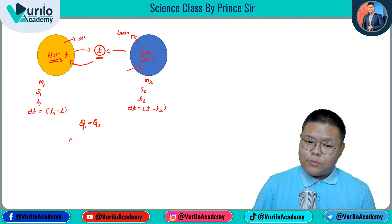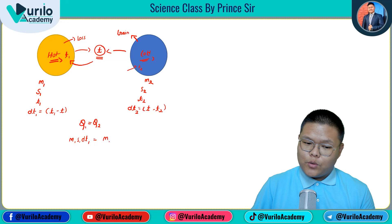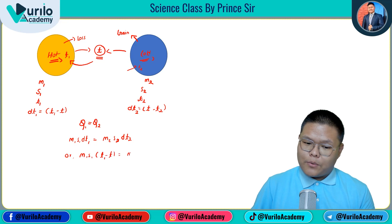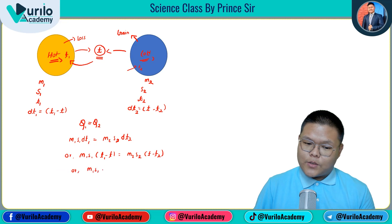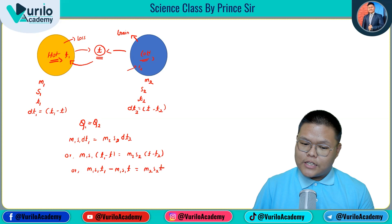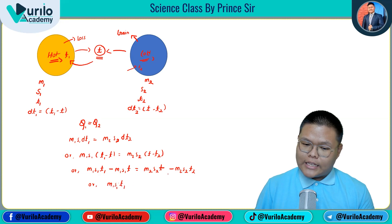The heat loss can be written as M1 S1 ΔT1, where ΔT1 = T1 − T. This is equal to M2 S2 ΔT2, where ΔT2 = T − T2. Using the heat equation: M1 S1 (T1 − T) = M2 S2 (T − T2). Expanding: M1 S1 T1 − M1 S1 T = M2 S2 T − M2 S2 T2.